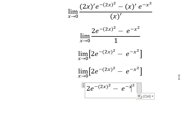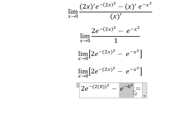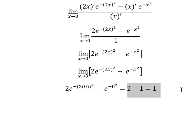So this one we have number zero, so we put zero here and here. So we can have the final answer: e to the power of zero equals one, this one equals one, two minus one equals one. So the final answer is one. This is the end, thank you for watching.